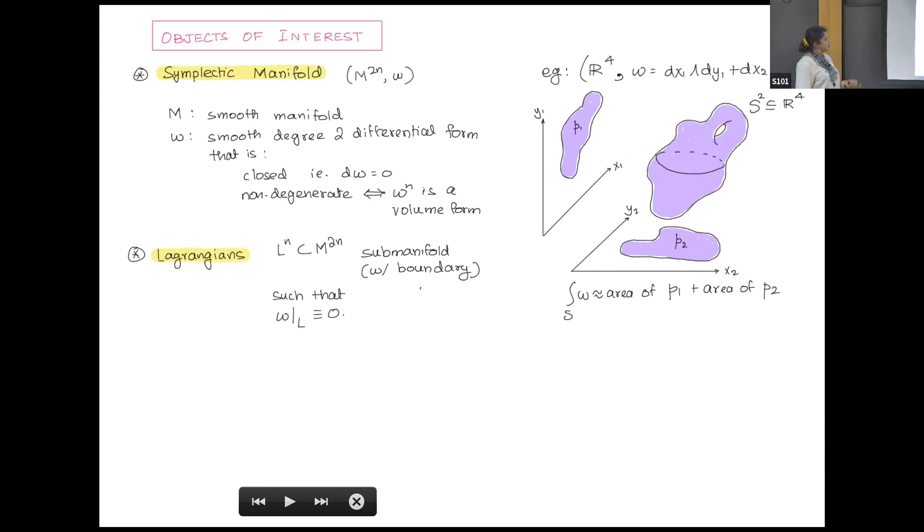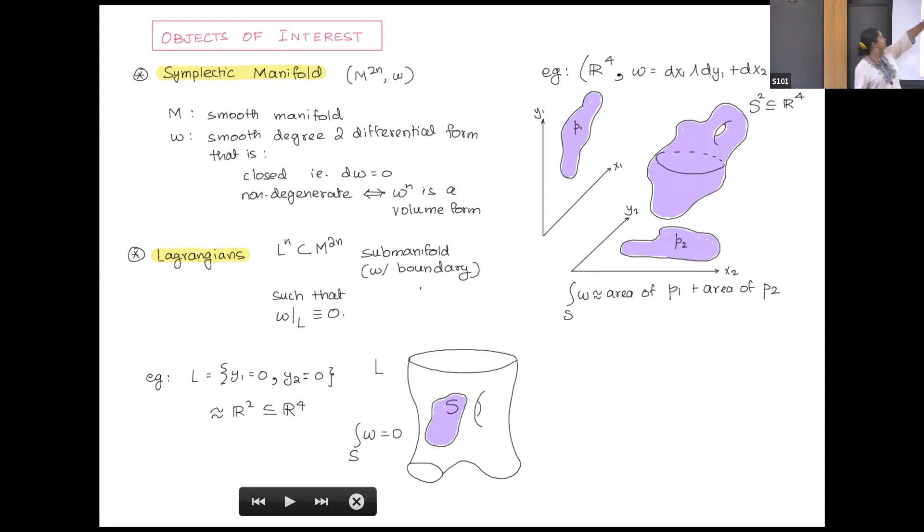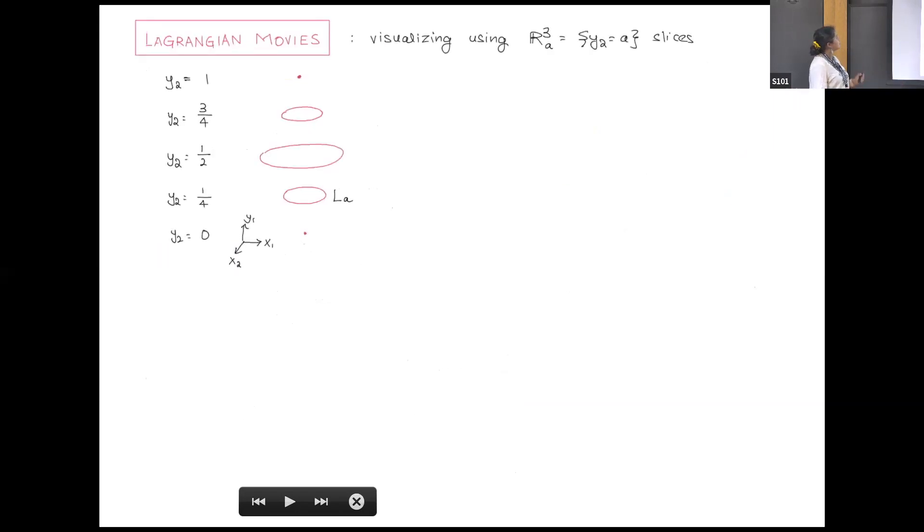We care about special submanifolds which are Lagrangians, which are half dimensional submanifolds. If you're looking at R4, we have surfaces such that the symplectic form vanishes on the submanifold. An example for R4 would be just the x1, x2 plane, or it could look funky. This brings us to Lagrangian movies.